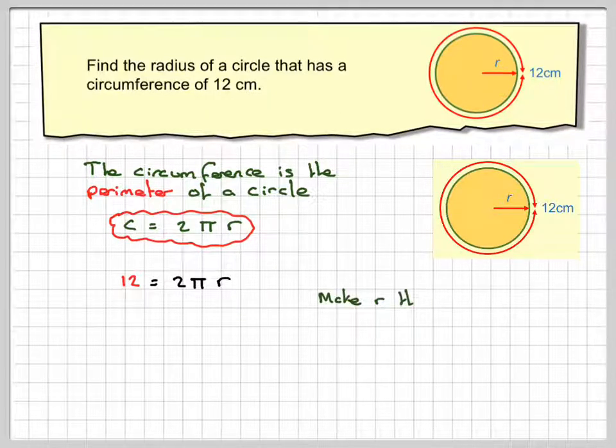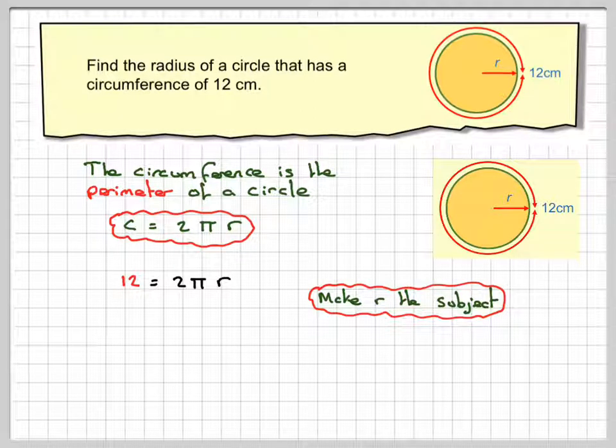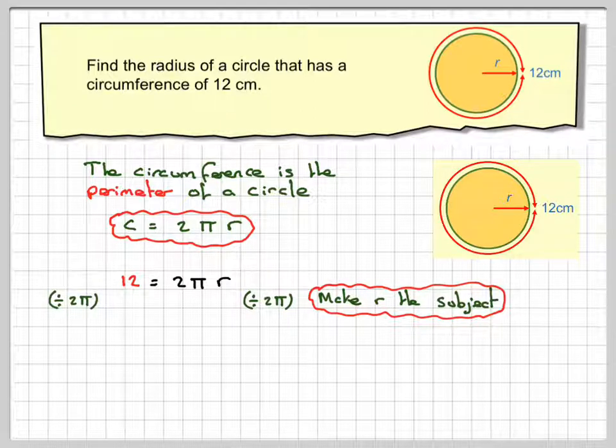Now what we need to do is make r the subject. That means we'll have to divide both sides by 2π. Dividing both sides by 2π, we get r equals 12 divided by 2π. Use fractions when you do this.